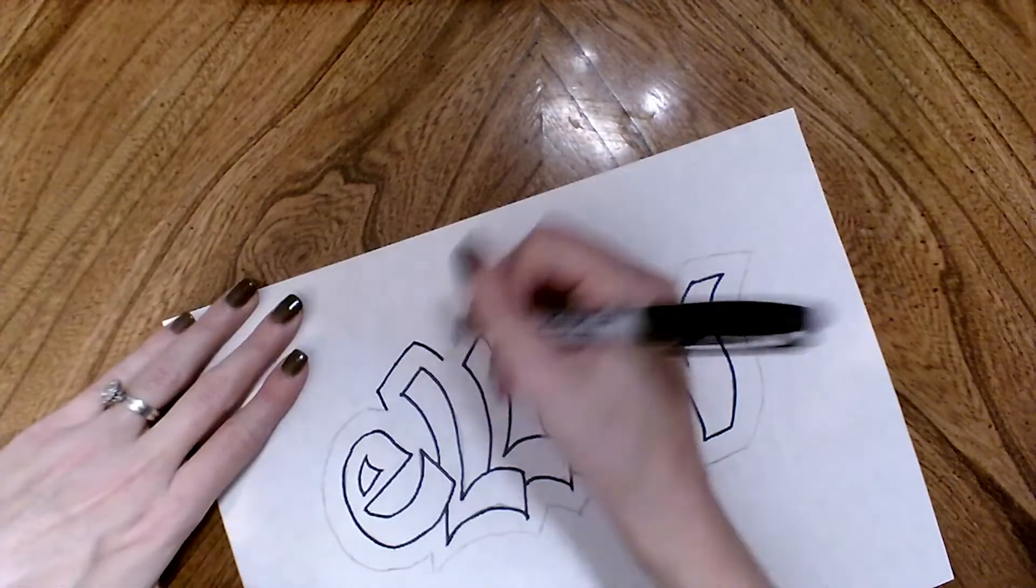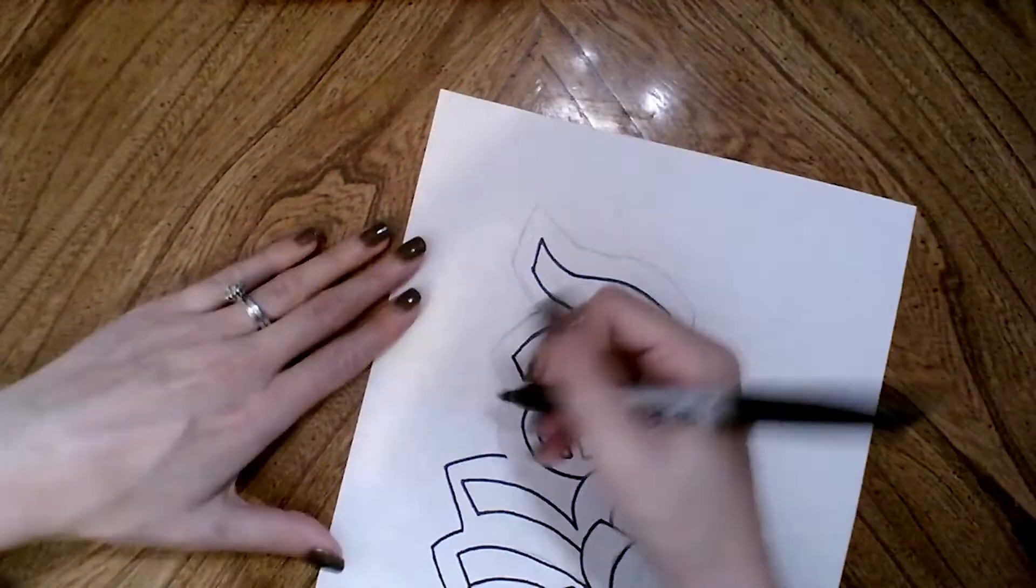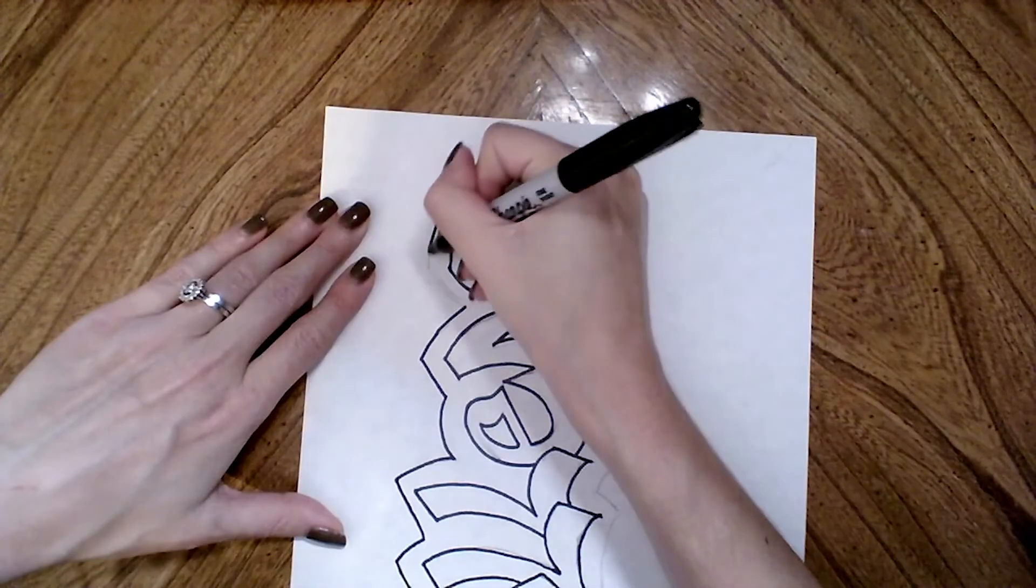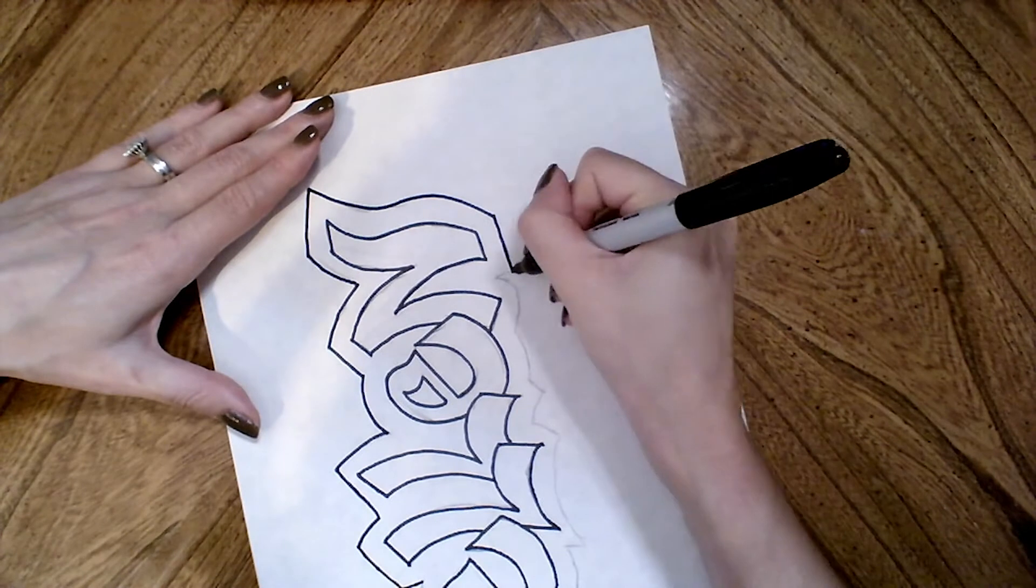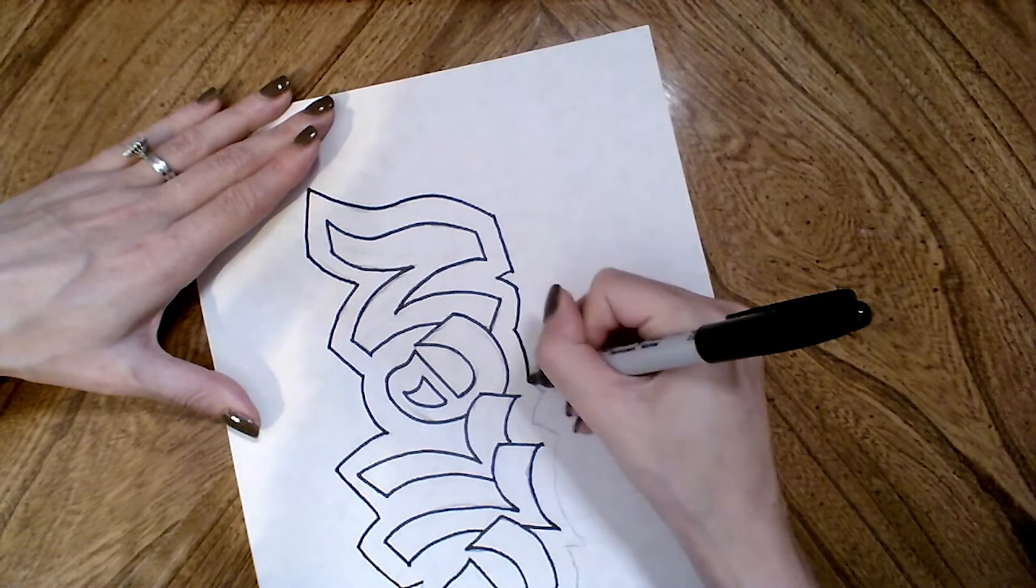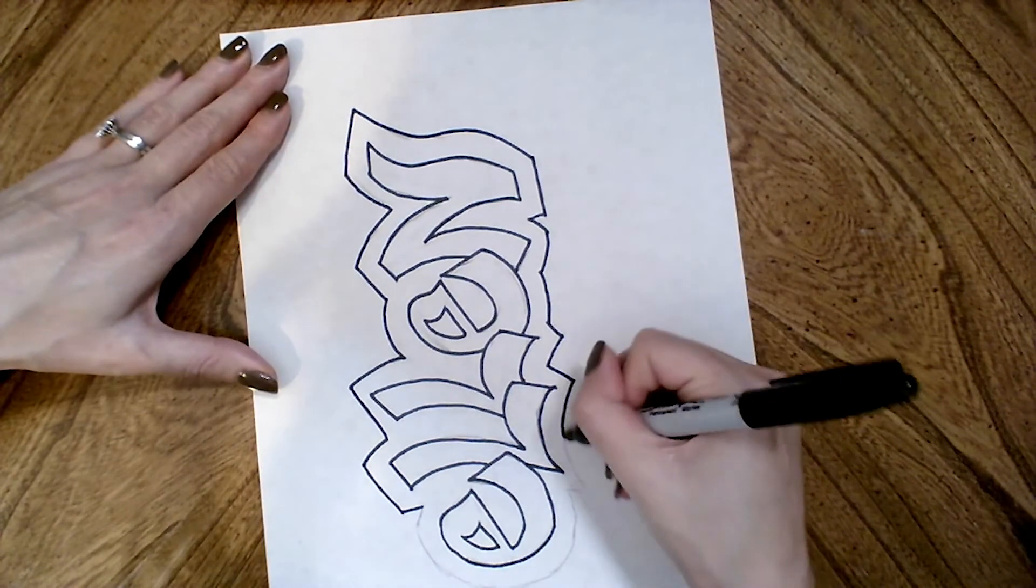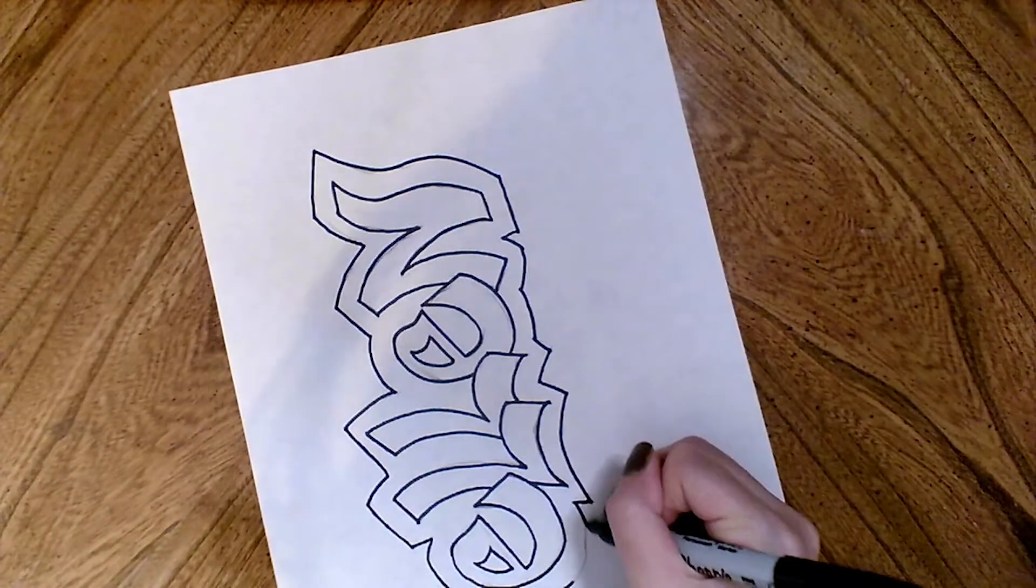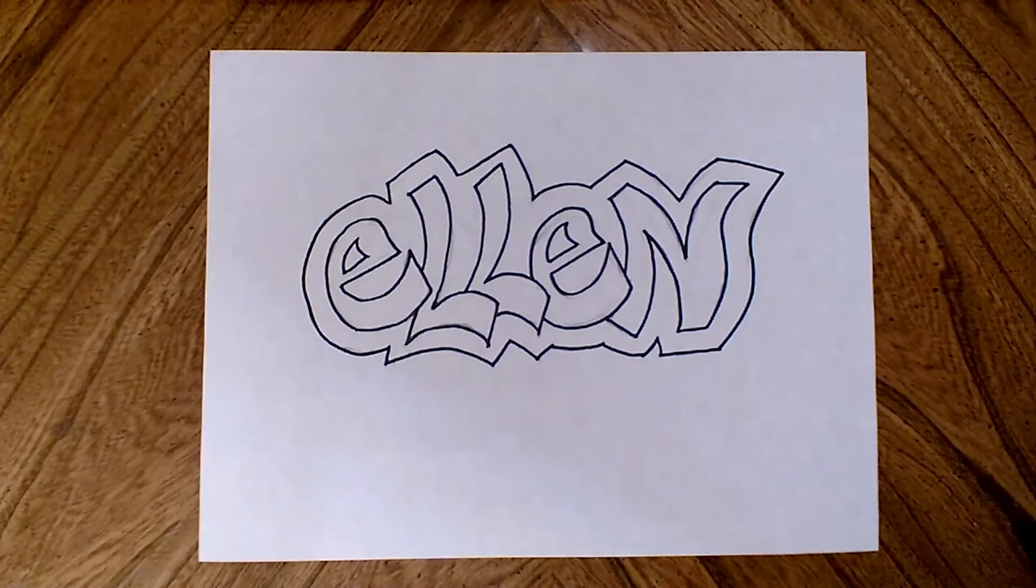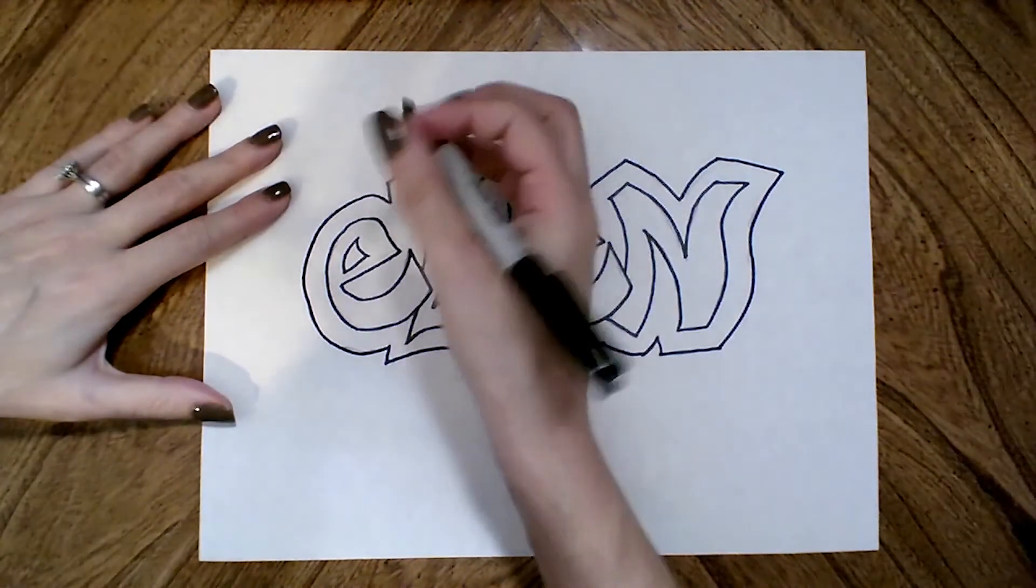I'm also going to trace over my little cloud shape. And then the last thing I'm going to do is come in and give the letters a little bit of a 3D effect.